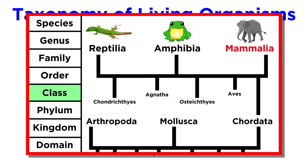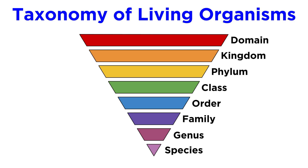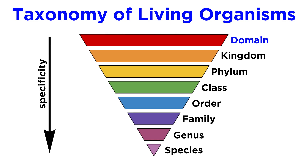We have covered this in some detail in the biology series, so be sure to check out that tutorial if it sounds unfamiliar. To briefly review, there are generally eight or more levels that go into classifying an organism. In the direction of increasing specificity,